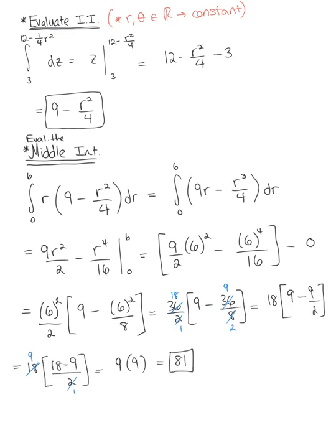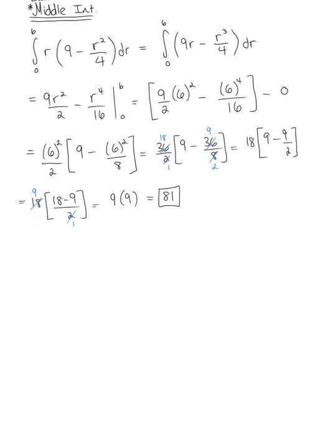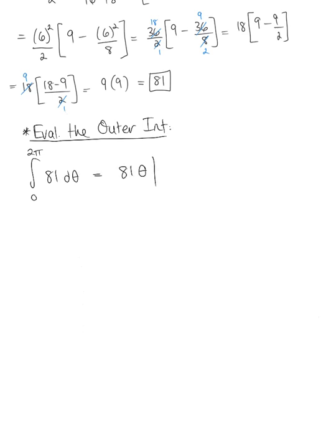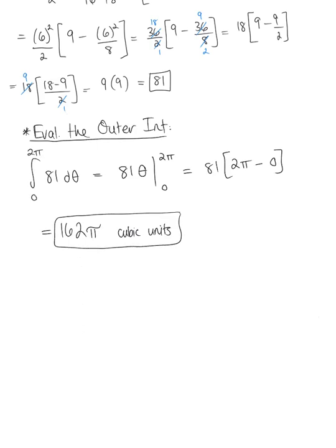Now for the outer integral with respect to theta: the integral from 0 to 2π of 81 dθ equals 81θ evaluated from 0 to 2π, giving 81 times 2π minus 0, which is 162π. Don't forget this is a volume, so the answer is in cubic units. The volume of the solid region D is 162π cubic units.